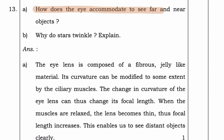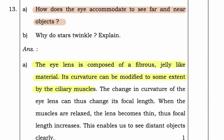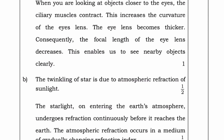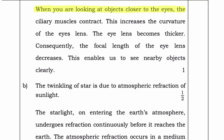How does the eye accommodate to see far and near objects? Answer: The eye lens is composed of a fibrous, jelly-like material. Its curvature can be modified to some extent by ciliary muscles. The change in curvature of the eye lens can thus change its focal length. When the muscles are relaxed, the lens becomes thin, thus focal length increases — this enables us to see distant objects clearly. When looking at objects closer to the eye, the ciliary muscles contract, increasing the curvature of the eye lens. The eye lens becomes thicker, consequently the focal length of the eye lens decreases — this enables us to see nearby objects clearly.